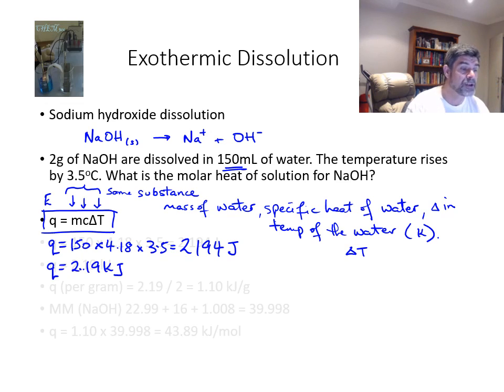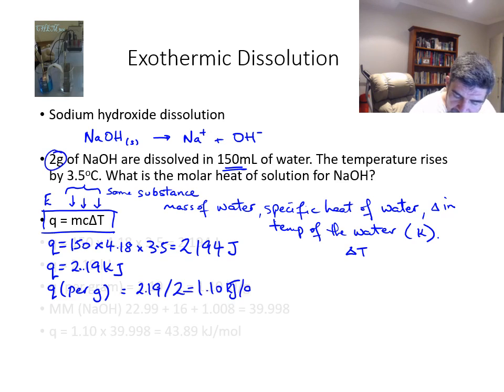Now there's two things I can do with this value. I can find the value per gram or per mole. So we're going to do both. Firstly, the value per gram is equal to 2.19 divided by the two grams that we have, which gives us 1.10 rounded up. And whilst I am rounding my numbers here, I would keep all the numbers in the calculator.